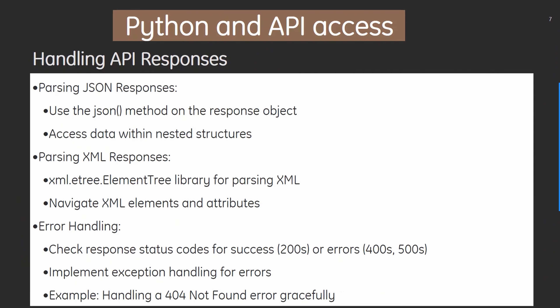Second, handling API responses: parsing JSON responses using the JSON method on the response object, accessing data with nested structures, and parsing XML responses using xml.etree.ElementTree for navigating elements and attributes. For error handling, we check the response status code — 200s for success, 400s and 500s for errors — and implement exception handling.